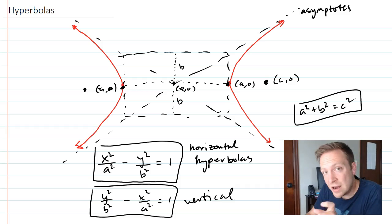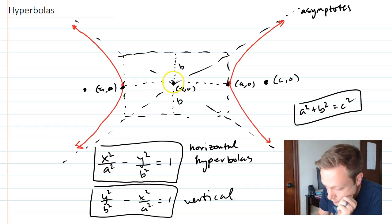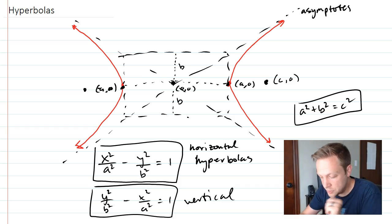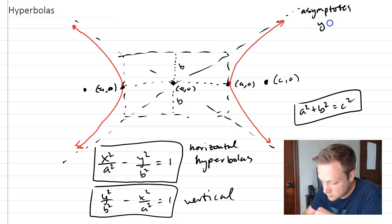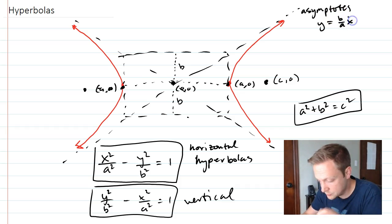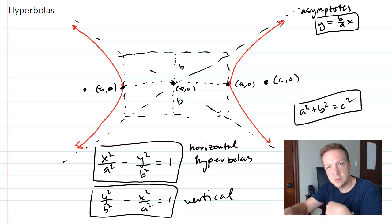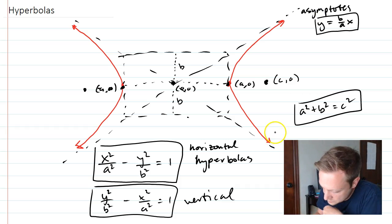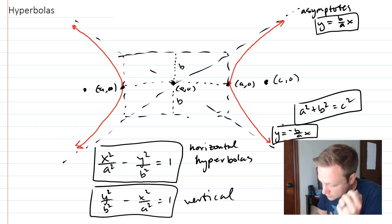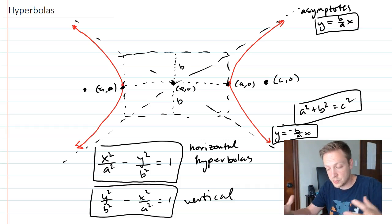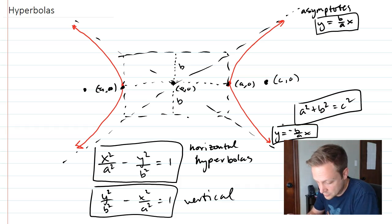You can figure out the actual line equations for the asymptotes. They pass through 0, 0, and since we go over A and up B, you already have a slope. The asymptote lines are rise over run, which is B over A times x. Because it's going through the center, there's no y-intercept to add. So the positive asymptote is y equals B over A times x going up and to the right. The other asymptote is y equals negative B over A times x. Again, this is when centered at 0, 0.